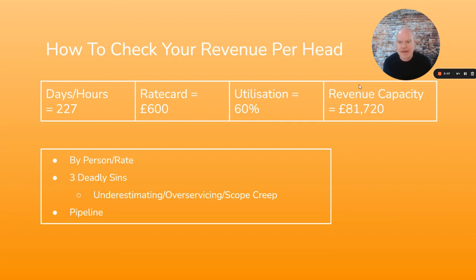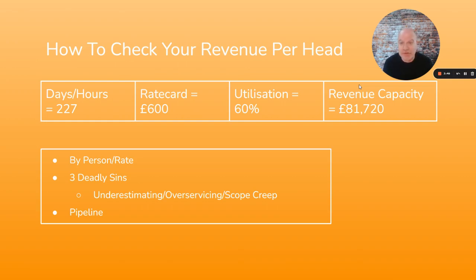That's a big caveat and a fundamental agency problem. Then there's also the pipeline issue: you have to keep everyone working consistently and not have gaps between projects and downtime. If there is downtime, utilization will drop and your revenue capacity will drop.